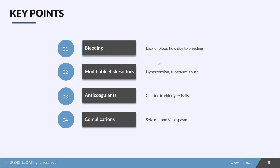To recap: a hemorrhagic stroke is a lack of blood flow to the brain due to bleeding. Some modifiable risk factors are hypertension and substance abuse, due to the weakening effect they have on blood vessels. We need to take extra caution with patients who are on anticoagulants, especially the elderly, because of their increased risk for falls and trauma. And we need to take precautions to prevent complications like seizures and vasospasms.